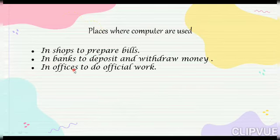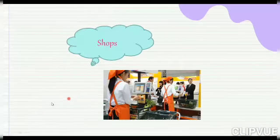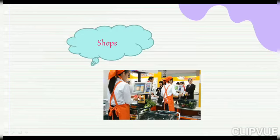The third new place is the office, where computers are used to do official work. You can finish your work with the help of a computer. You can see in this picture of a supermarket, like D-Mart, people standing in front of computers, scanning products and preparing bills — so computers are used in shops.